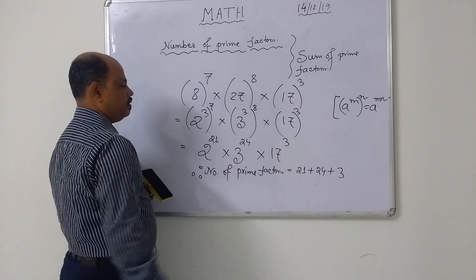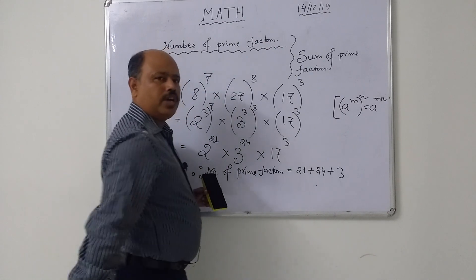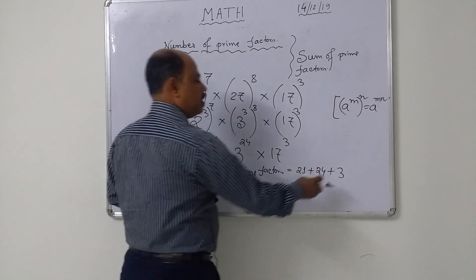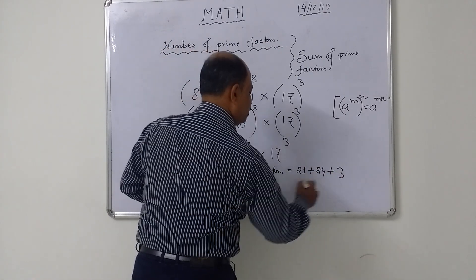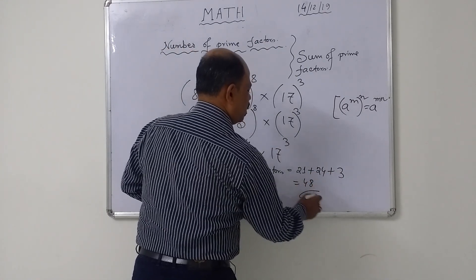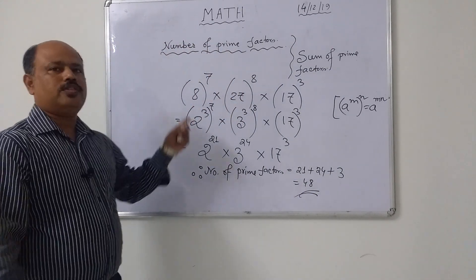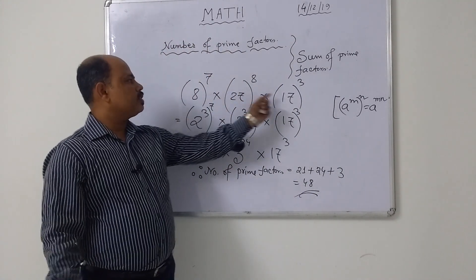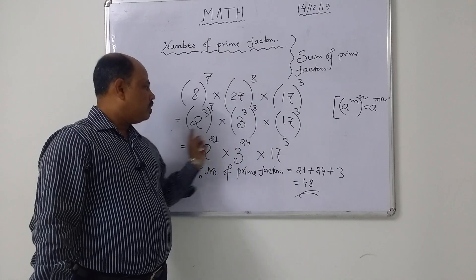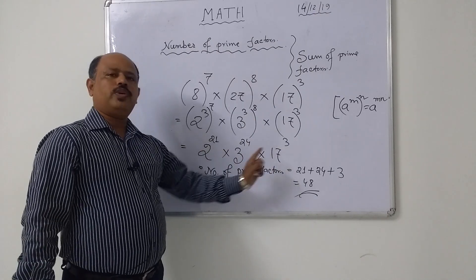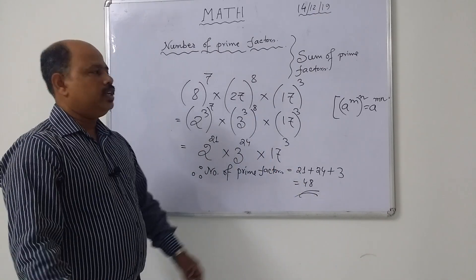21 plus 24 is 45, and 45 plus 3 is 48. So the total number of prime factors of that expression is 48.